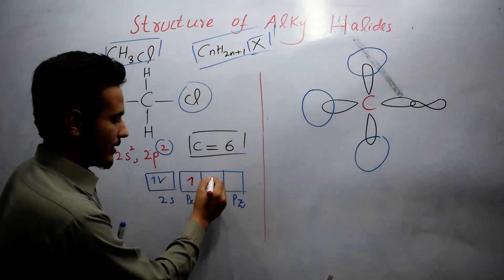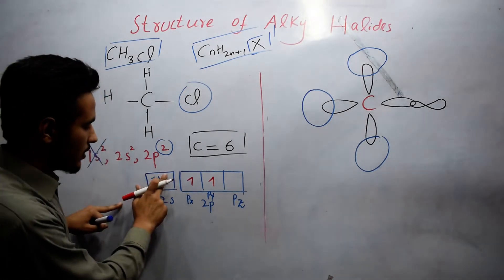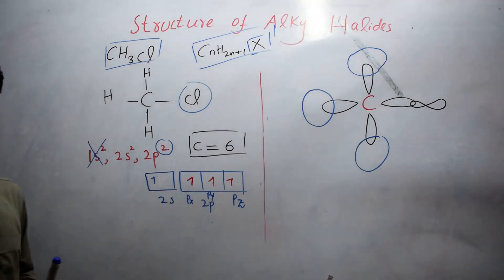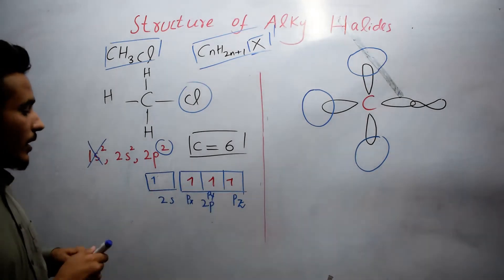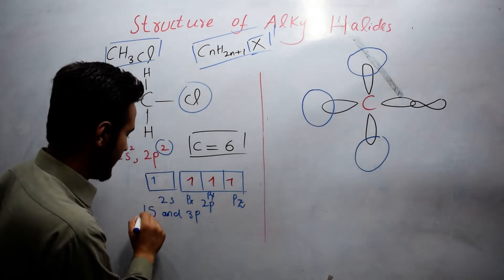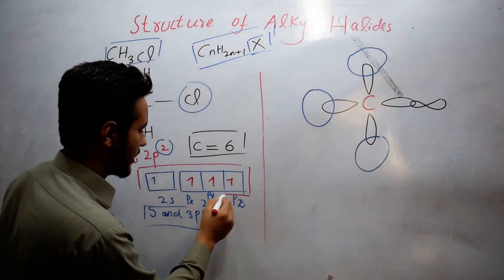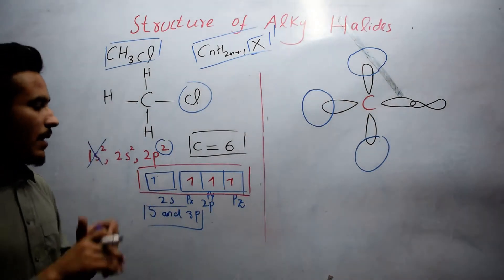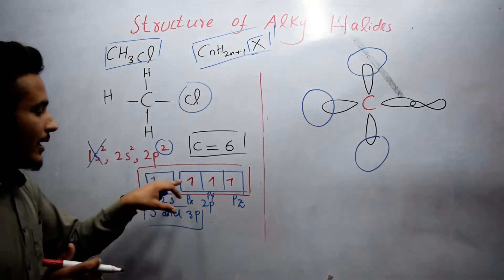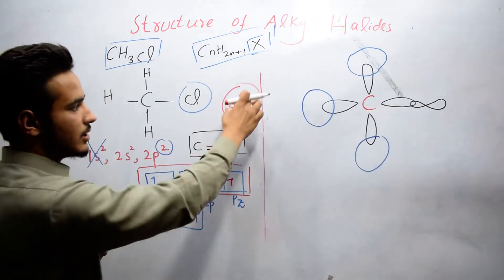What happens here is that one electron from 2s moves toward pz, completing the pz atomic orbital so that carbon now has four unpaired electrons. Then the one 2s orbital and three 2p orbitals mix with each other to form four new hybrid atomic orbitals, which is known as sp3 hybridization.